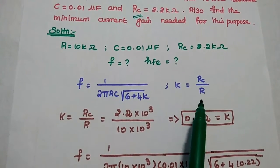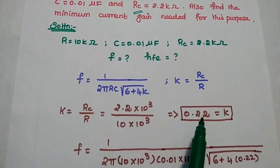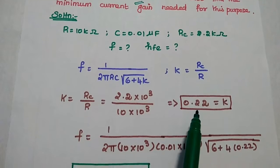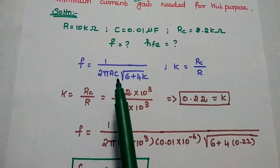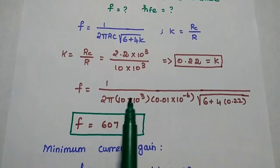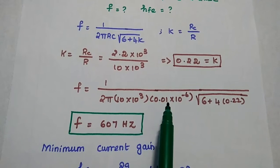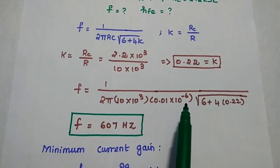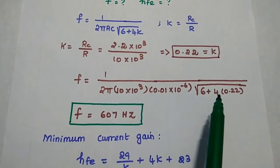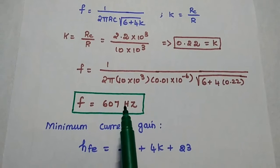Substituting the values of RC and R: K is equal to 2.2 into 10 to the power 3 divided by 10 into 10 to the power 3, giving K value as 0.22. Then substituting K, R, and C in the formula: F is equal to 1 by 2 pi into 10 into 10 to the power 3 into 0.01 into 10 to the power minus 6 into square root of 6 plus 4 into 0.22. We get the answer as 607 hertz.